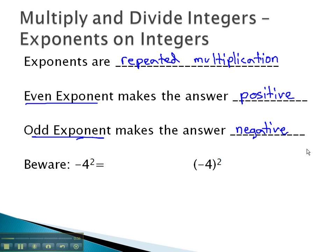I do want you to be aware of a slight difference, though, between two very similar-looking problems. Negative 4 squared, and negative 4 in parentheses squared. We want to be very careful with exponents, because exponents are only going to affect what they're physically attached to.